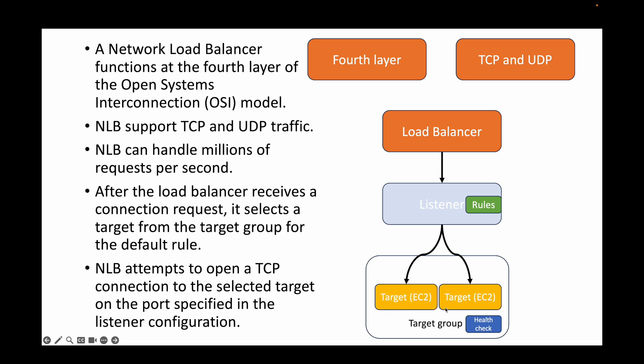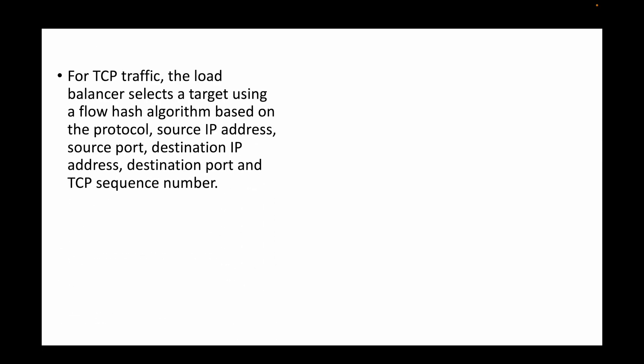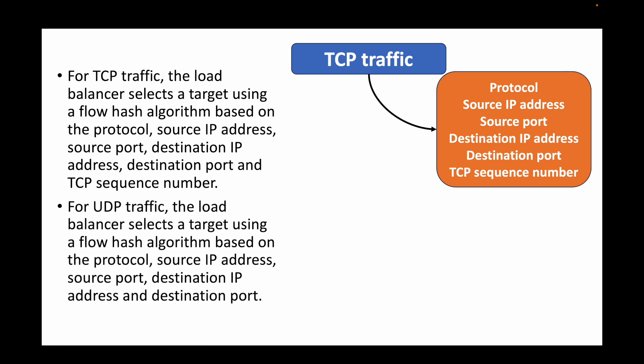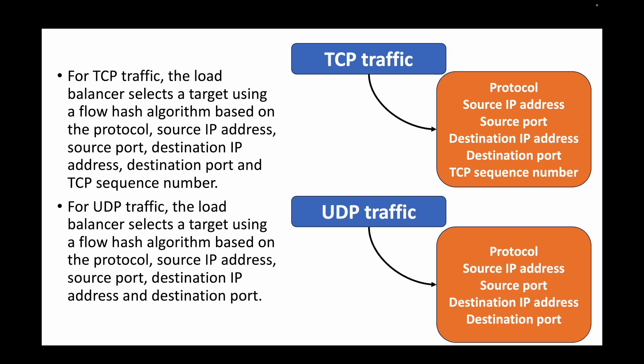For TCP traffic, the target is selected based on the protocol, source IP address, source port, destination IP address, destination port, and the TCP sequence number. UDP traffic, on the other hand, makes use of the protocol, source IP address, source port, destination IP address, and destination port — but UDP does not use the TCP sequence number. Other than that, all components are used to handle the traffic.